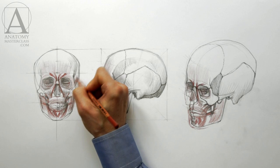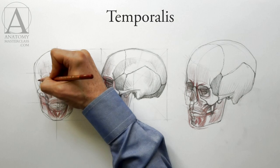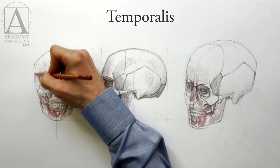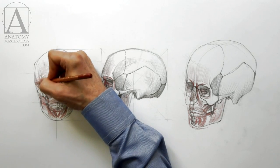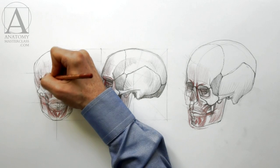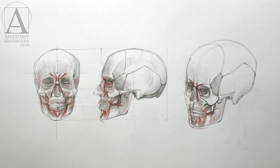The fan-shaped muscle on the side of the head is called the temporalis. It is a powerful, flat muscle that pulls the lower jaw upward. Usually it is covered by hair, but on a bald head it is easily discernible, especially when a person is chewing.